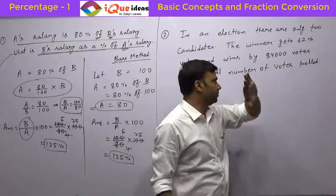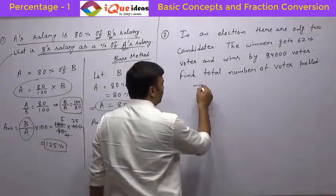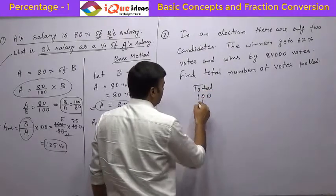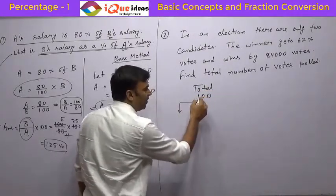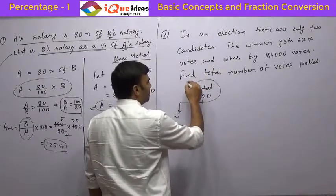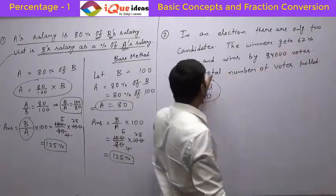Find the total number of votes polled. Now, let's try to understand. In any case, if the total number of votes is 100, that means the winner must get 62% of 100, so the winner must get 62 votes. So here we are taking total as the base, because the winner gets 62% of the total votes.